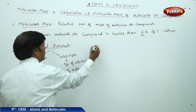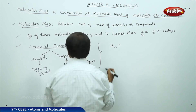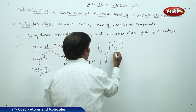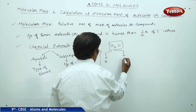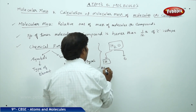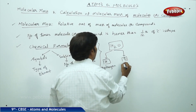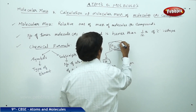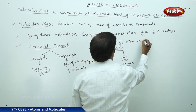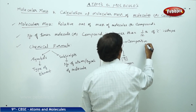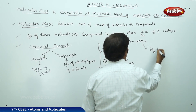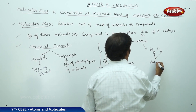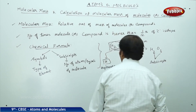For example, if you take H2O, this contains two symbols: H represents hydrogen element and O represents oxygen element. In the formula H2O, the 2 and the 1 are the subscripts, indicating two hydrogen atoms and one oxygen atom.